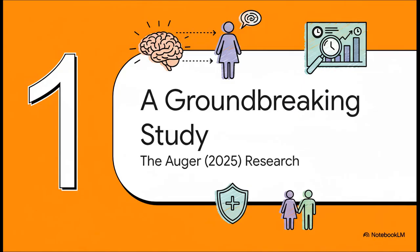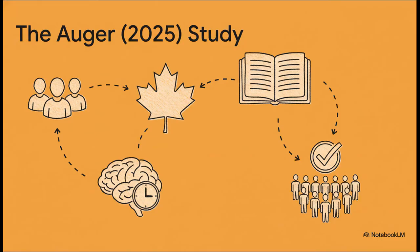First up, let's talk about what this study actually is and why it's making such waves. This research comes from Natalie Auger and her team in Quebec, Canada, and it was published in the prestigious Journal of Psychiatric Research. They wanted to clear up some of the fog from past studies. Their big goal? To figure out what, if any, are the long-term mental health risks after an induced abortion, and to do it using really solid, large-scale evidence.